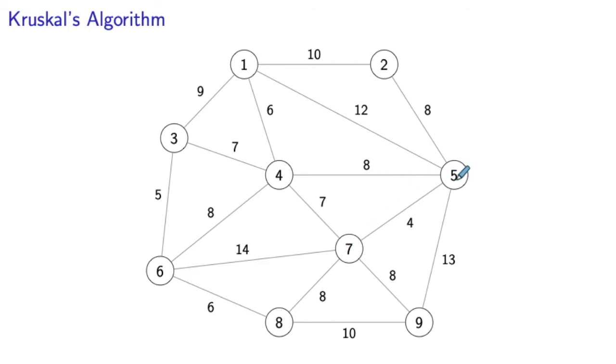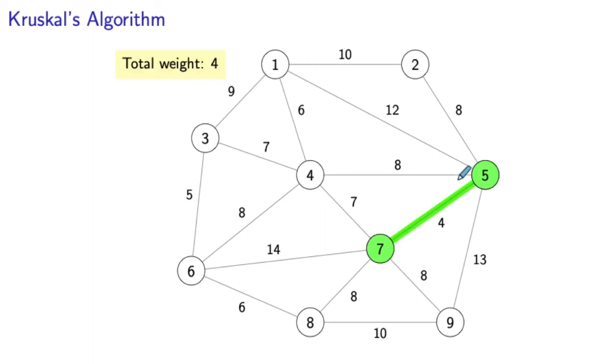So the first thing we are going to do is add the edge five-seven to our constructed tree. Once we added the edge five-seven, now the total weight of the tree that we are constructing is four.